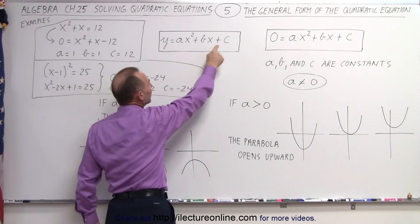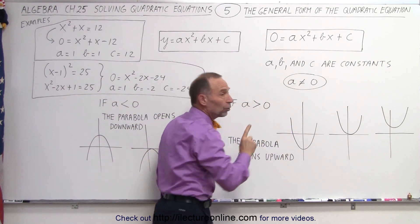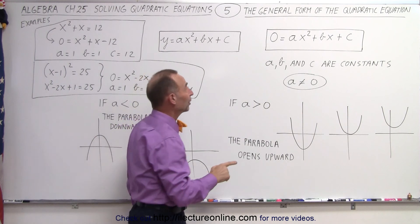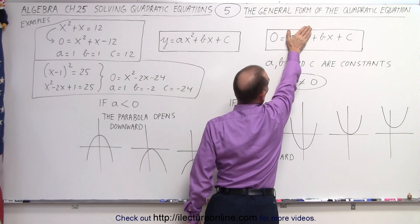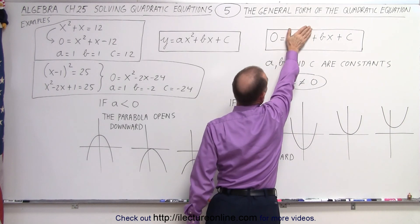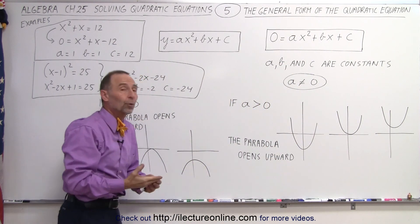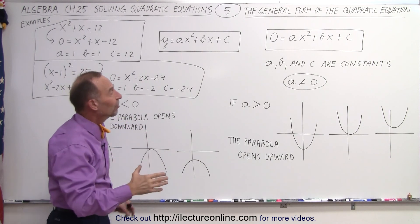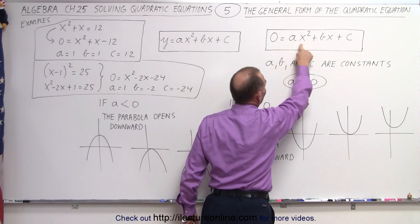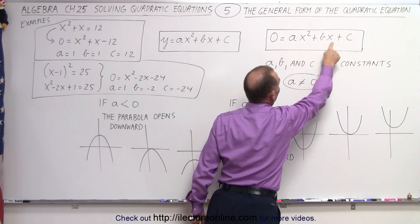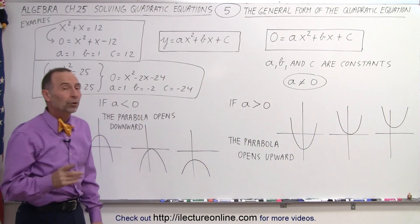Now a, b, and c are simply constants. Notice that a cannot equal zero, because if a equals zero then there's no second-order term — no quadratic term — and therefore it's no longer a quadratic equation; it becomes a linear equation. So the only restriction is that a cannot be zero. You always have to have the quadratic term, but you don't have to have the other two terms in order to have a quadratic equation.